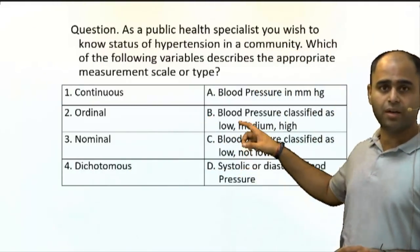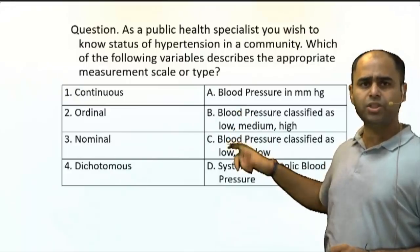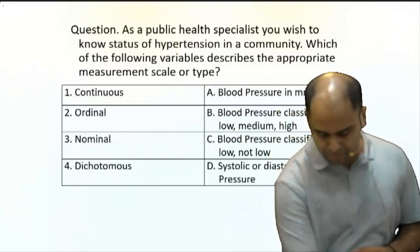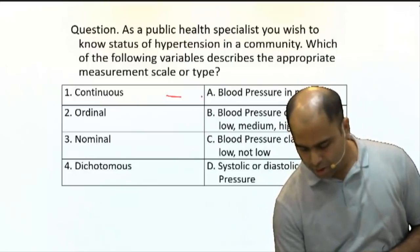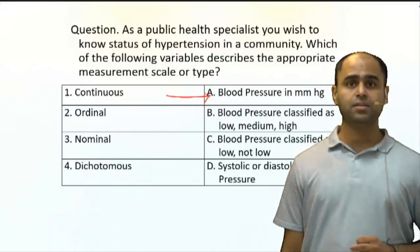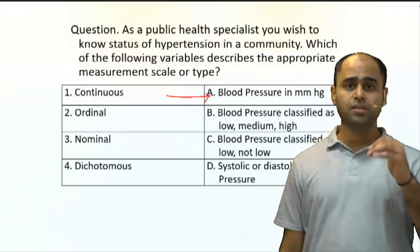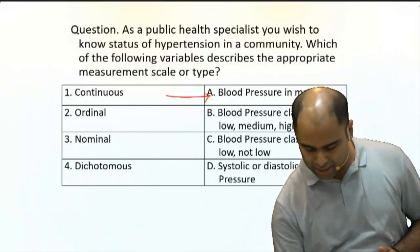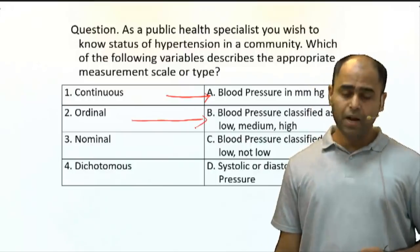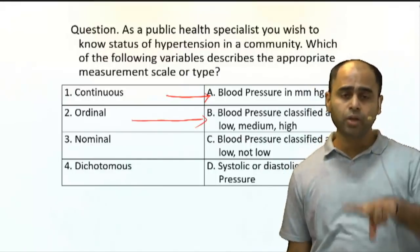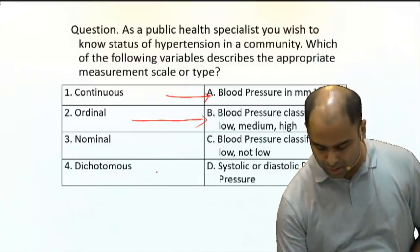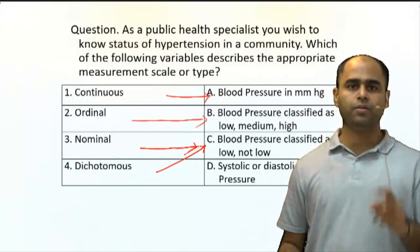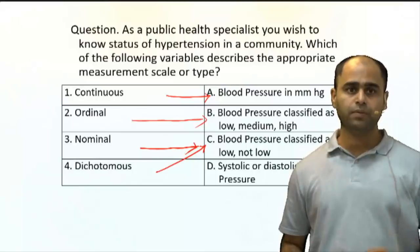Now coming back to the question: blood pressure in mmHg is quantitative data measured on a continuous scale. Blood pressure classified as low, medium, and high is ordered — so that is ordinal. Blood pressure classified as only low or not low — only two categories — is dichotomous, and since they are just names, also nominal. So for option C, both options 3 and 4 will work.